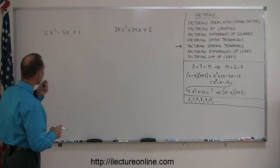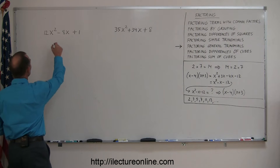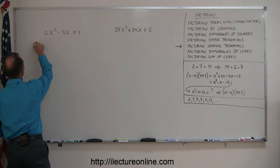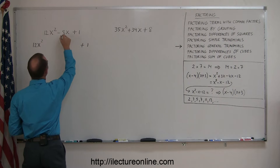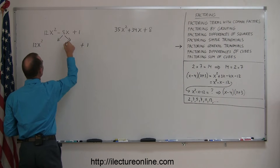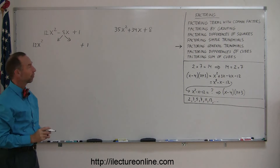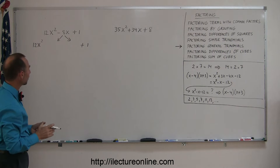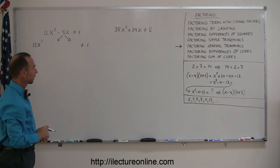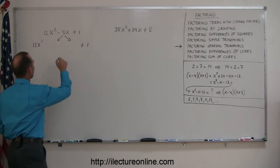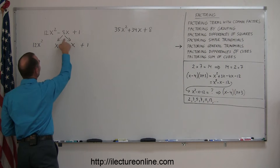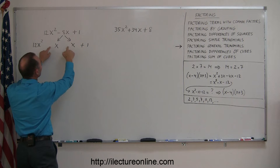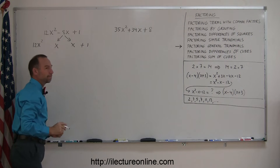So how do we do that? The trick is to rewrite this trinomial as a polynomial of four terms. In other words, we're going to break up the middle term — the x-to-the-first-power term — into the sum of two middle terms. What goes in front of these two x's will add up to negative eight, but what will those two numbers be? That's the trick.